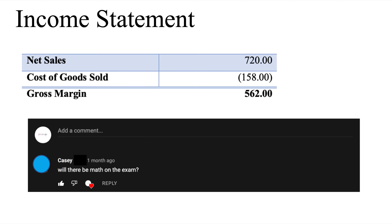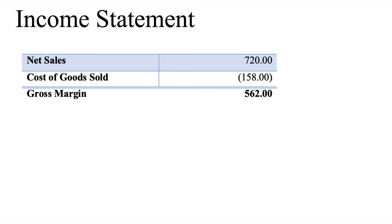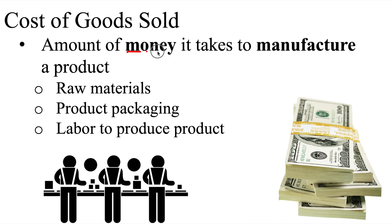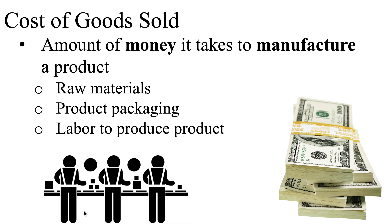I have been asked if there will be any kind of math on the exam. Keep in mind, on the Imblex there will be no calculations of any kind. This is just to give you an idea of what exactly cost of goods sold is. Remember, cost of goods sold is the money that it takes to create a product — this can be raw materials, the packaging of the product, and/or the labor to create the product. Make sure you know what cost of goods sold means, as it is likely you will see this on the Imblex.